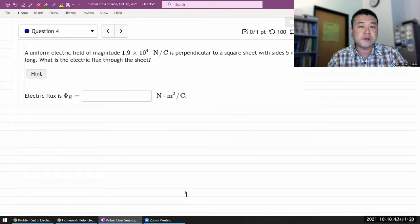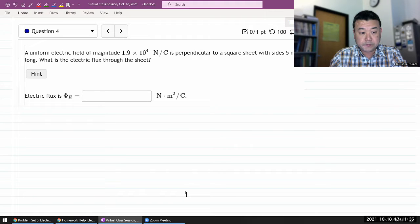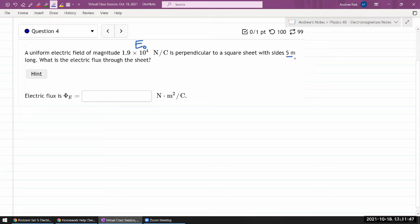So, the question says, a uniform electric field of some magnitude is perpendicular to a square sheet of size, so let me label this L, 5 meter long, what is the electric flux through the sheet.